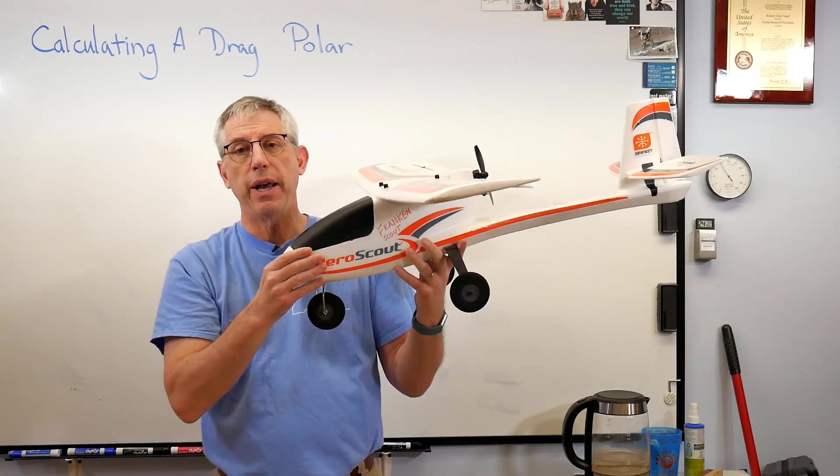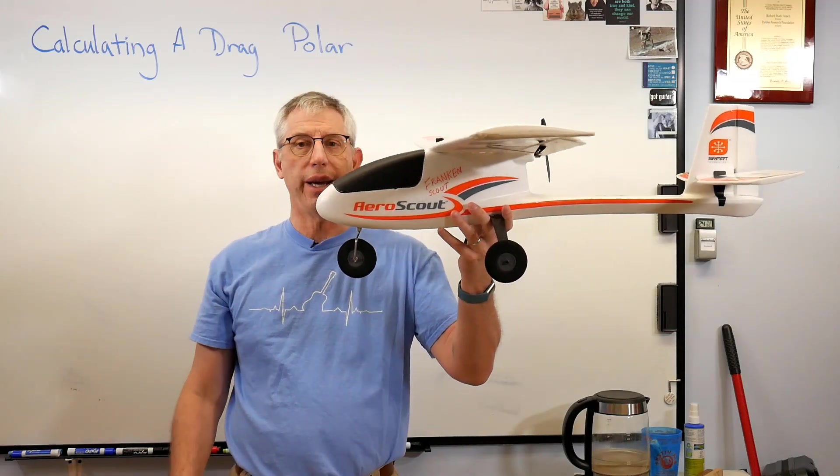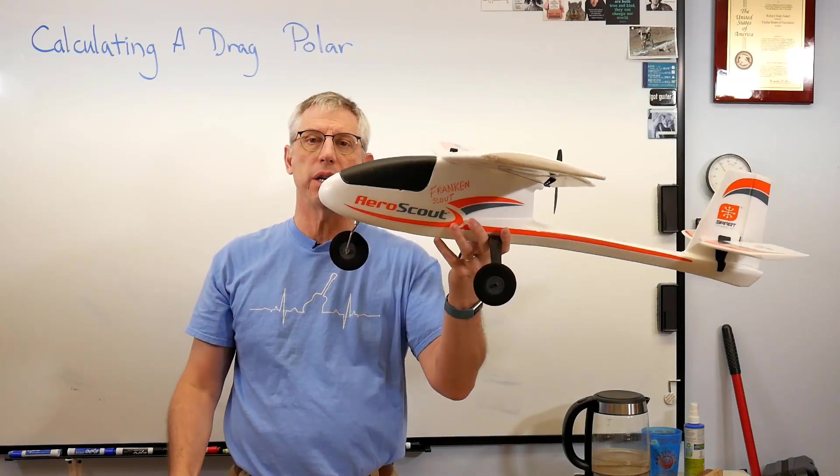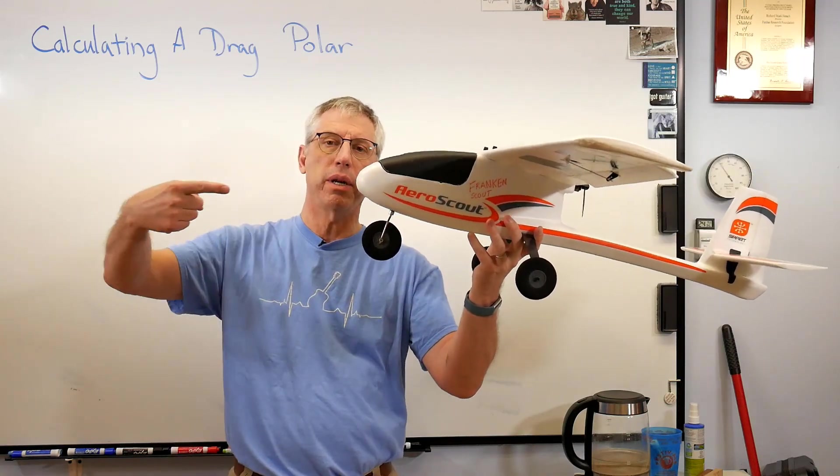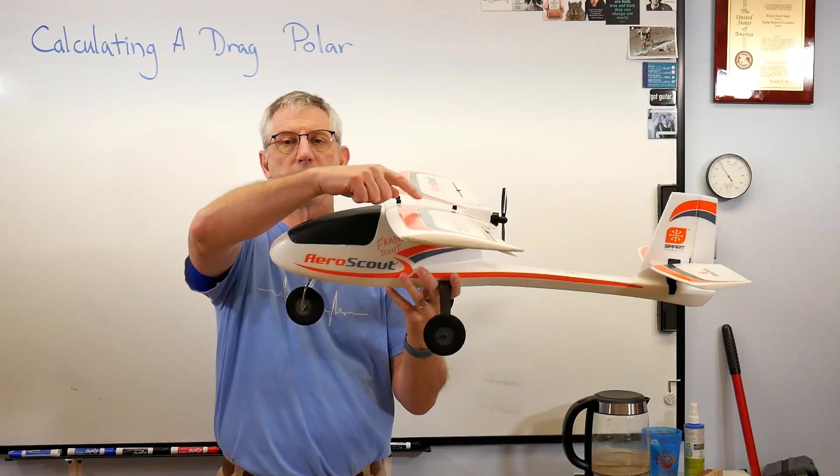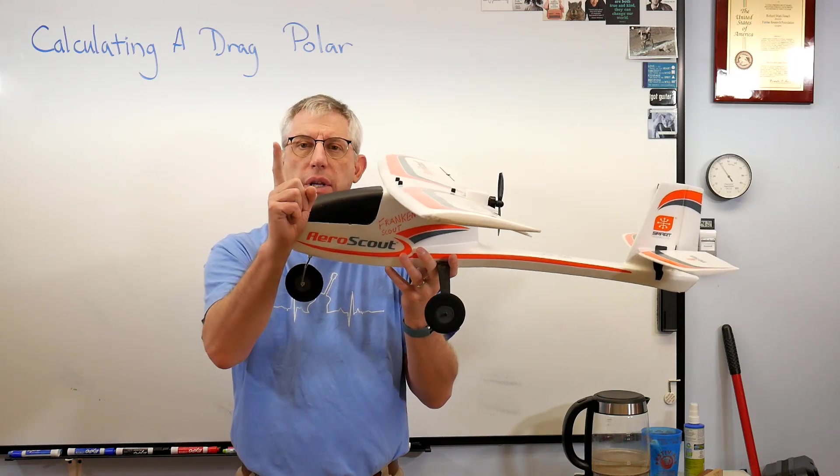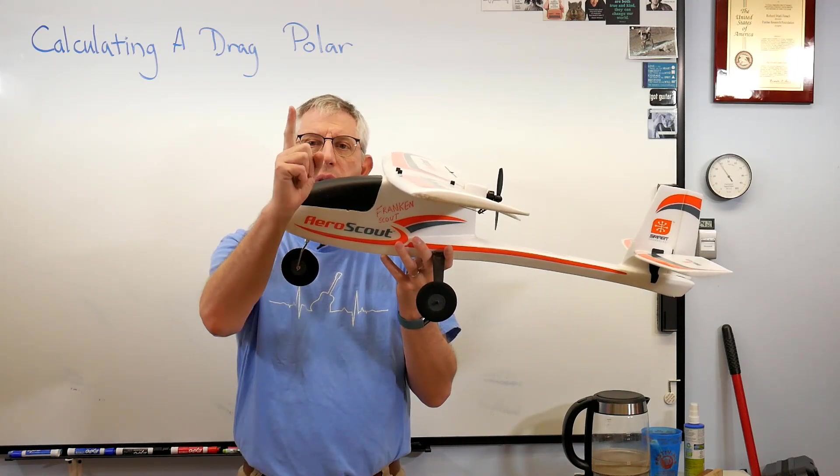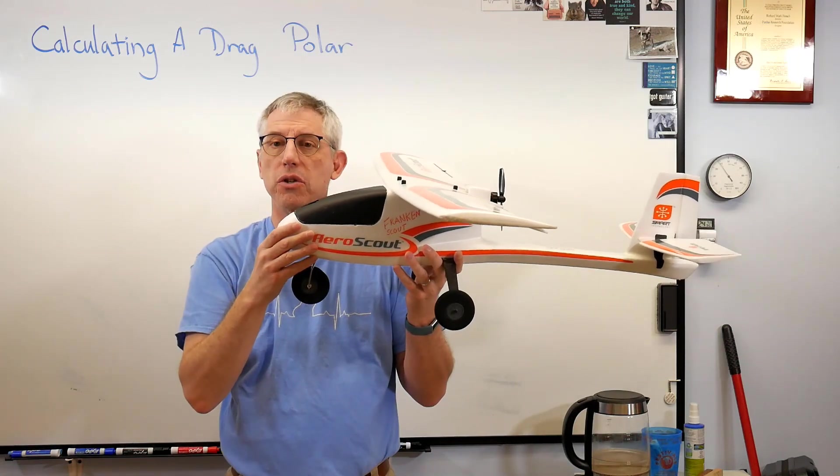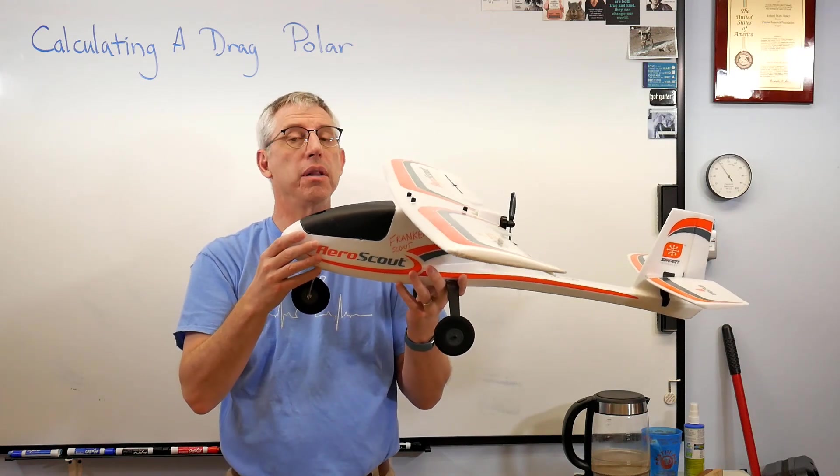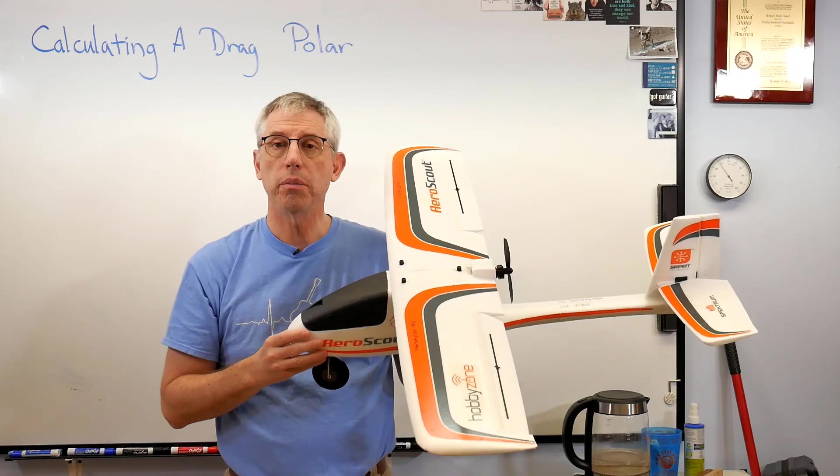The other component of drag is called induced drag, and that's because the plane is making lift. The plane doesn't fly exactly straight into the wind. It flies with a little bit of what's called an angle of attack. The plane has an angle with respect to the incoming air and that's how the wing makes lift. When it's at an angle, it makes a force up but also makes a force back, and that backward component is induced drag. The more lift you're making, the more induced drag you're making.